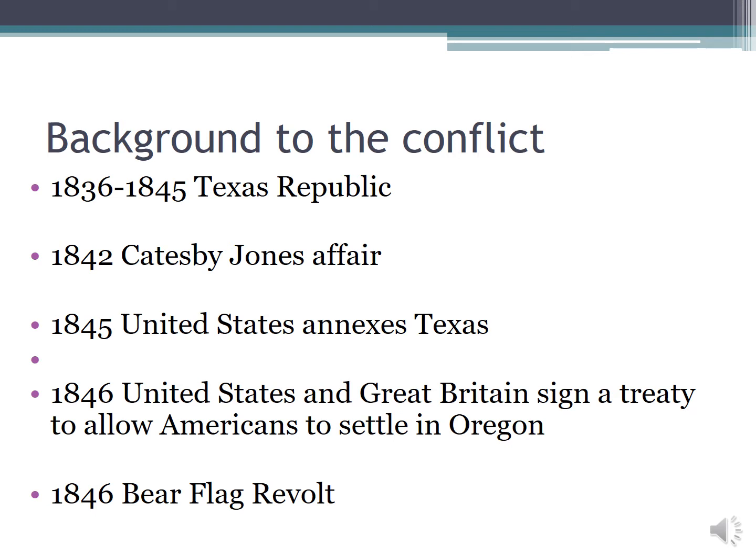In 1842 — and your textbook talks about this — there was something known as the Catsby Jones Affair. A United States Commodore decided to sail up from Peru to Monterey and essentially claim Monterey for the United States, mistakenly thinking that the United States and Mexico had already gone to war over the California province. So we can see indications of this mentality as far back as 1842. Even though the Mexican-American War does not officially start until 1846, you can see Americans moving into California and eyeing the province.